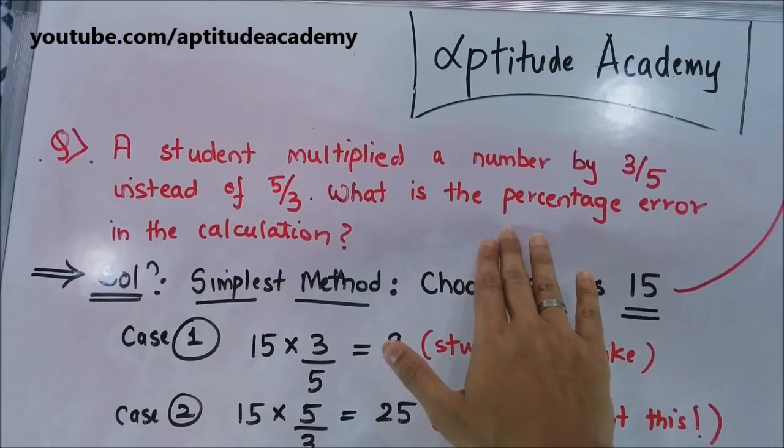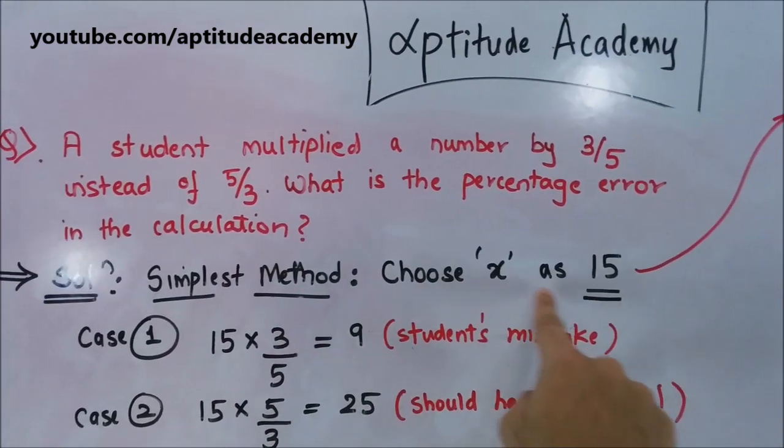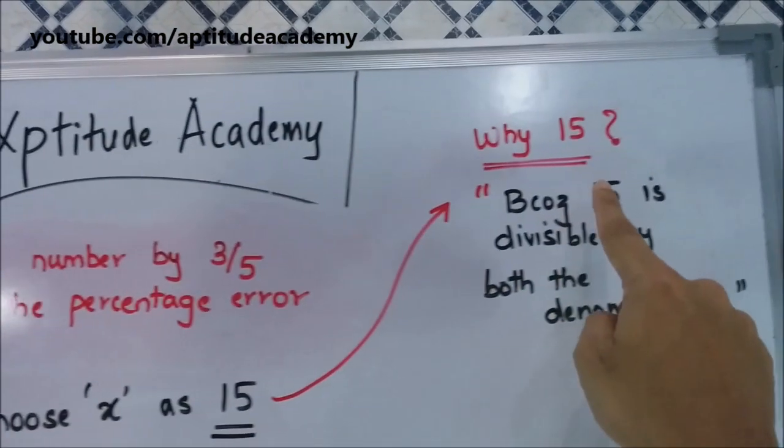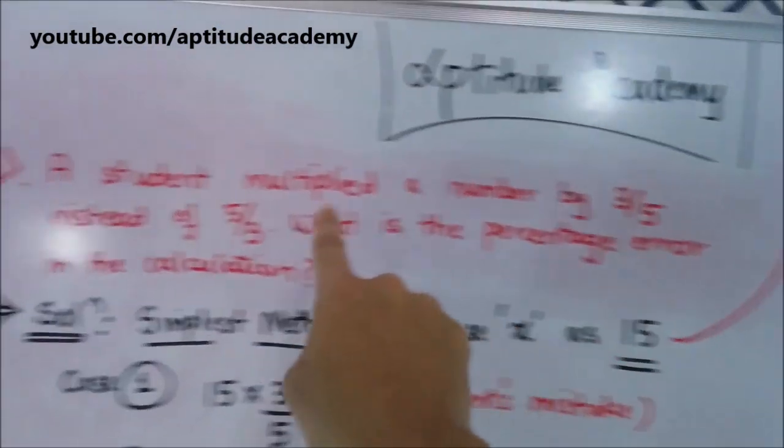Instead of doing complex calculations with fractions, I'll show you the simplest method. Choose X as 15. Why 15? Because 15 is divisible by both denominators, 5 and 3.